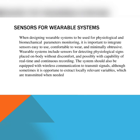The system should also be equipped with wireless communication in order to transmit the signal, although sometimes it is opportune to extract locally relevant variables which are transmitted when needed. Most sensors embedded into wearable systems need to be placed at specific body locations. For example, motion sensors used to track the movement of body segments are often in direct contact with the skin. Another example is a physiological sensor such as a pulse oximeter. However, it is reasonable to embed sensors within a piece of clothing to make the wearable system as less obtrusive as possible.